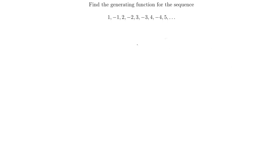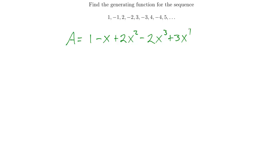Here's another example. I want to find the generating function for the sequence 1, negative 1, 2, negative 2, 3, negative 3, and so on. Again, I don't know what this is, so I'll call it A and write the generating series: 1 minus x plus 2x squared minus 2x cubed plus 3x to the 4th minus 3x to the 5th, and so on — alternating signs with increasing powers of x.